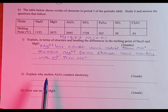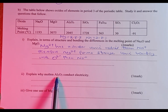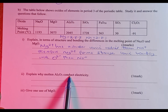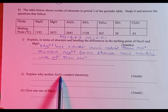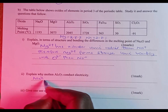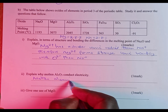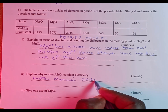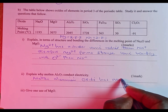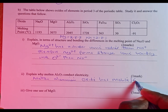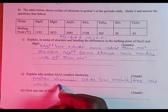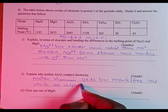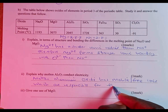Question (ii): explain why molten aluminium oxide conducts electricity. Aluminium oxide is an ionic compound, and in its molten form it contains mobile ions — free ions — which are responsible for electrical conductivity.